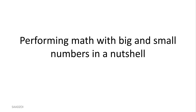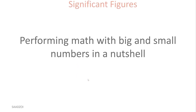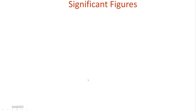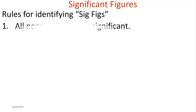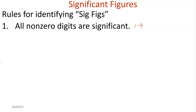It really comes down to whether the zero is significant or not. Because for significant figures, anything that's non-zero is significant. So what does non-zero even mean? Numbers one through nine are significant. So anytime you see numbers one through nine, they are significant. Pretty straightforward.